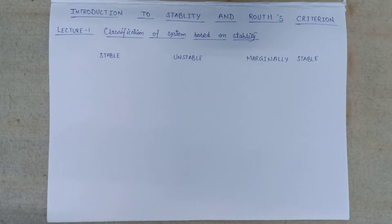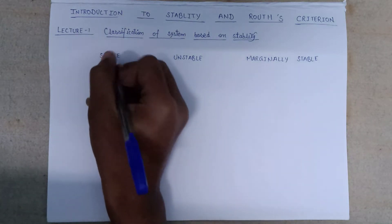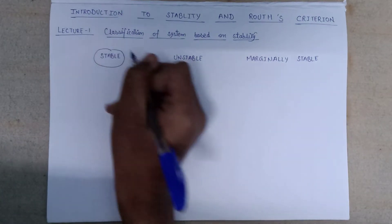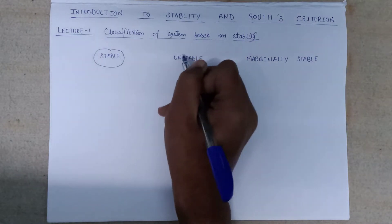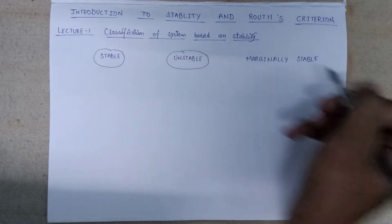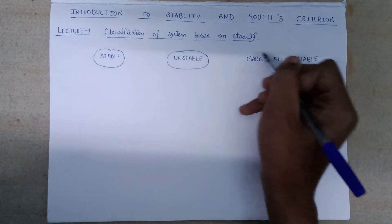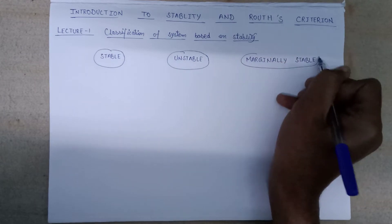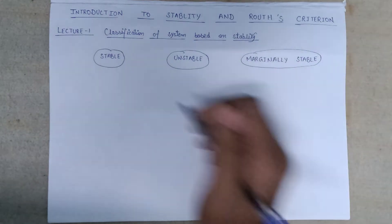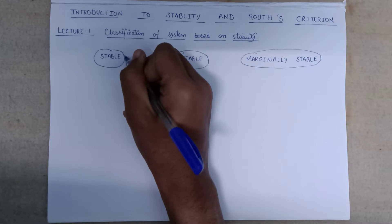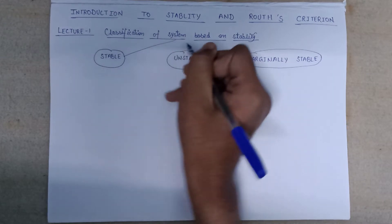The classification of the system is done in three ways. The first type is known as a stable system, the second type is known as an unstable system, and the third one is a marginally stable system. So these are the three types of systems into which we can classify them.